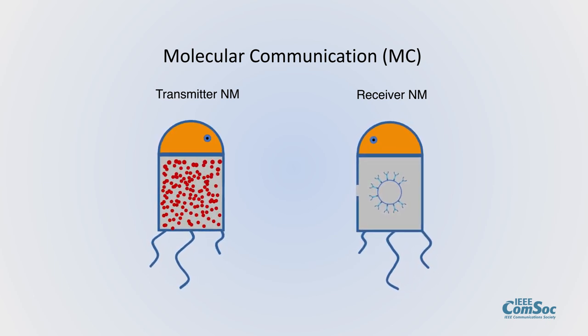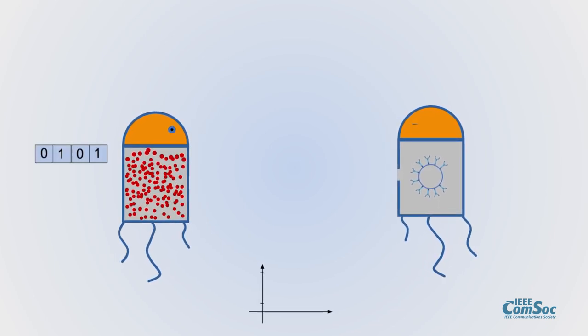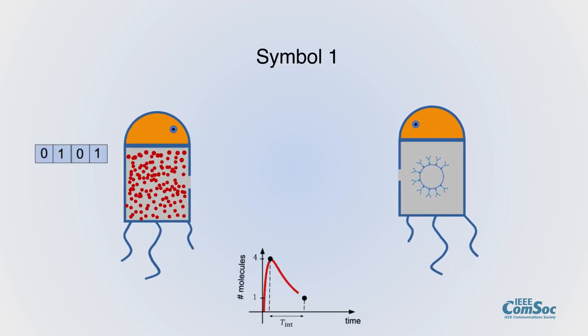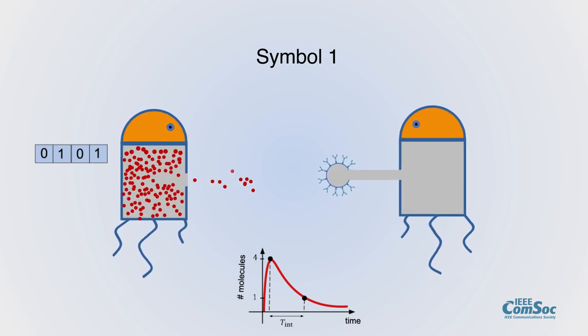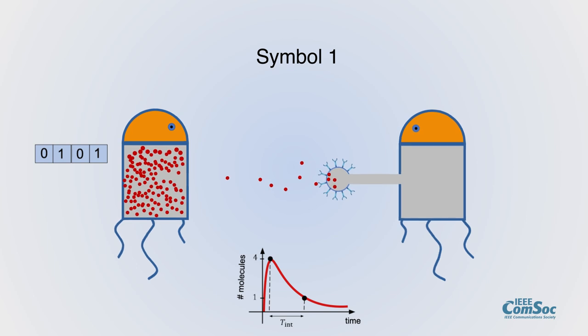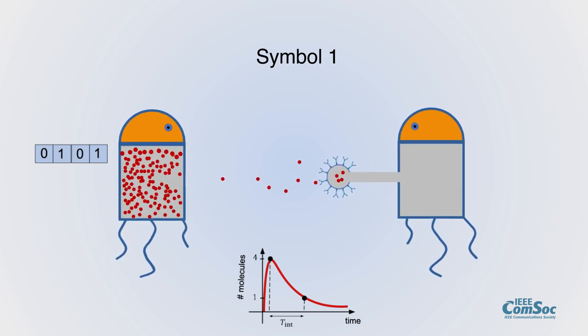For example, in this animation, to communicate the symbol one, the transmitter opens the gate for a short time and 11 molecules flow out. As you can see, four molecules reach the receptor.